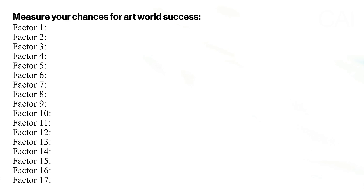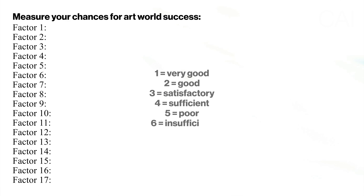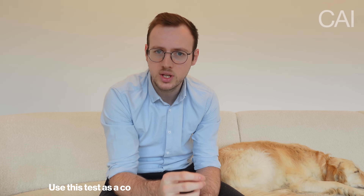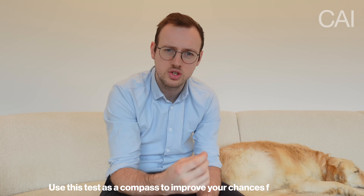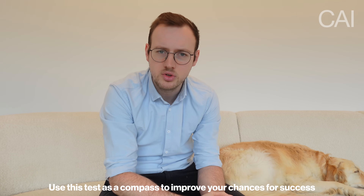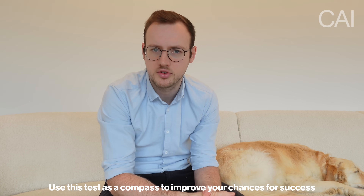If you score very, very good on a certain factor, you can give yourself a score of 1. If it's just good, give yourself a 2; satisfactory is 3; sufficient is 4; poor is 5; and insufficient is 6. The lower your score, the better your chances for success. By writing these factors down, we can see where we should pay more attention to improve our chances.